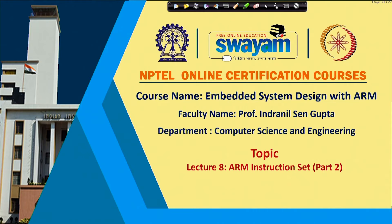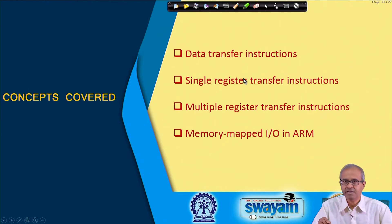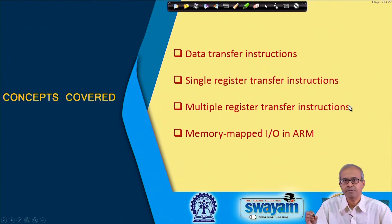In the last lecture, we discussed ARM instructions for arithmetic and logic operations. In this lecture, we shall further look into instructions which allow you to transfer data between registers and memory. The title of this lecture is 'ARM Instruction Set: Part 2'. We shall primarily talk about data transfer instructions between registers and memory, and also briefly cover memory-mapped I/O in ARM.